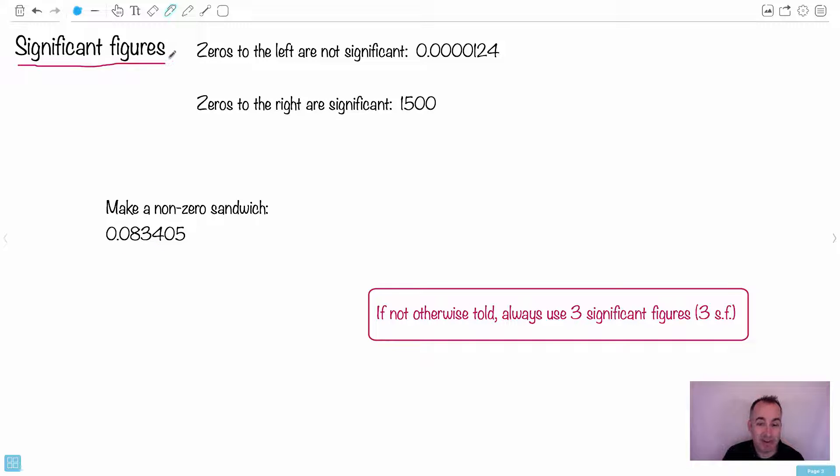Next thing is significant figures. Those are things that cause people lots of problems. One thing important, zeros to the left are not significant. What does that mean? A number like 0.0000124, this particular number right here only has this many. In other words, these ones right here, we ignore these as far as significant figures. So this one here has three significant figures. We often say SF for short. This one, however, zeros to the right are significant, which means this has one, two, and then ones to the right we count them. So one, two, three has four significant figures.